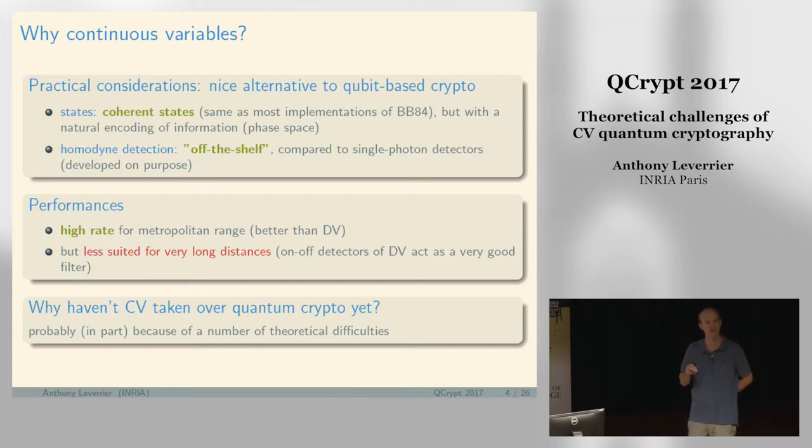For CV-QKD it's very simple in both cases. The states that we need are coherent states, very easy to prepare. It's the same as in most implementations of BB84 with coherent states. But you have a more natural encoding of information in phase space.